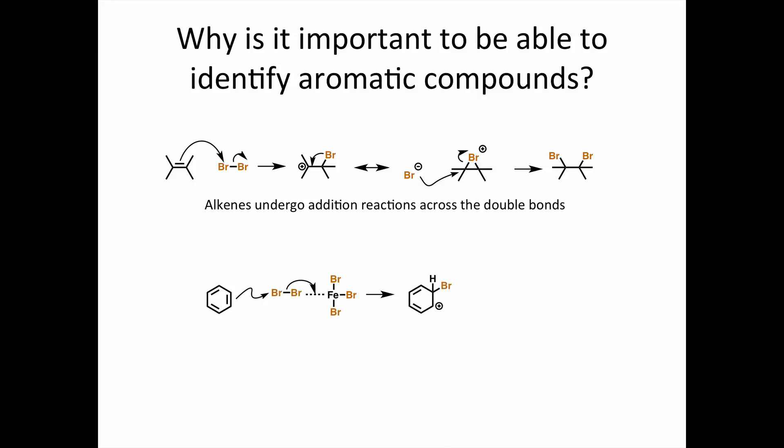Benzene attacks bromine, but Br- does not add to the cation. The stability gained by the compound becoming aromatic again is so great that the intermediate is deprotonated instead, resulting in the addition of just one bromine atom.